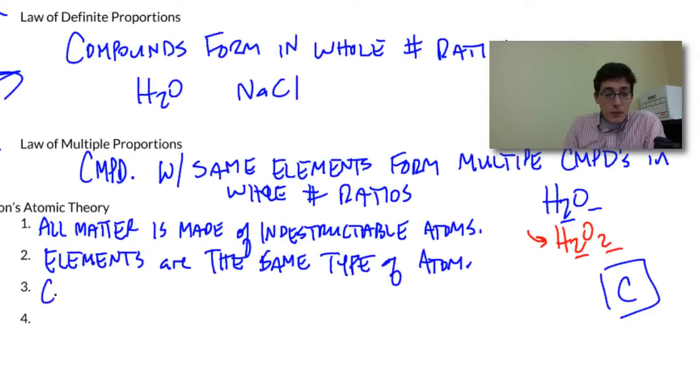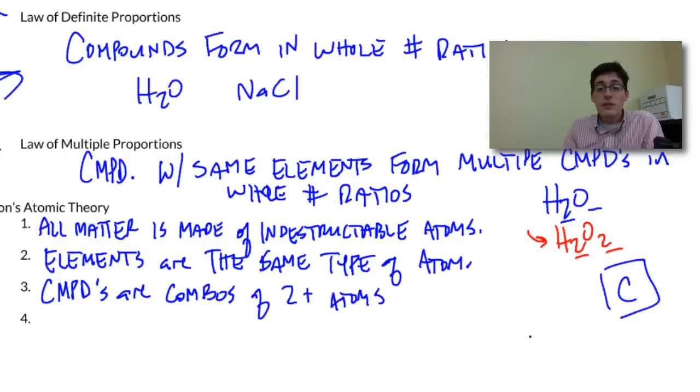Third is that compounds are combinations of two or more atoms. So we can have compounds just like H2O. So I take two hydrogen and I mix them with an oxygen, and that gives me the compound water. And this water is exactly the same no matter how it gets formed.